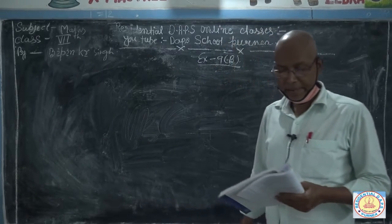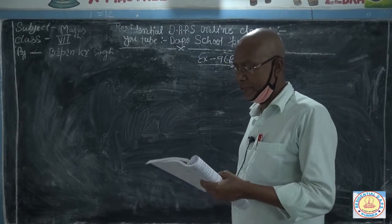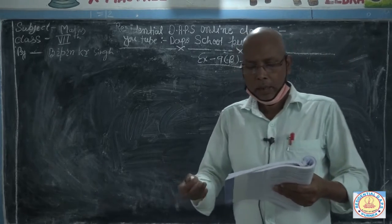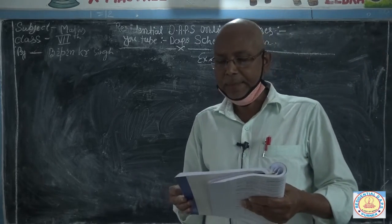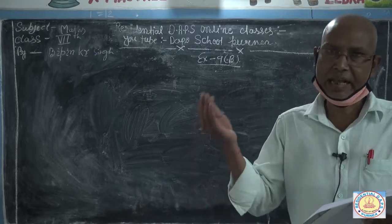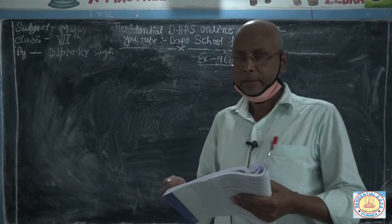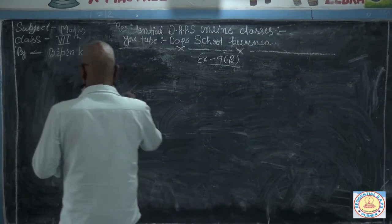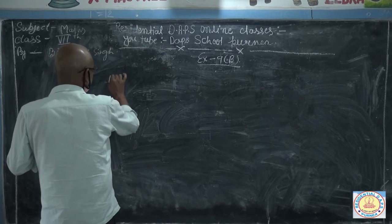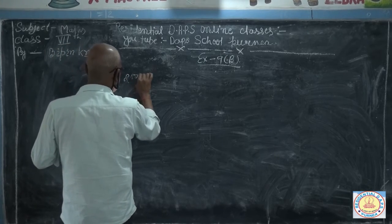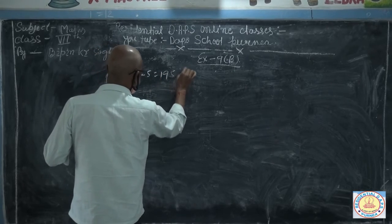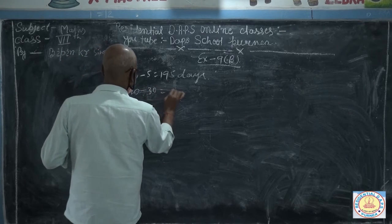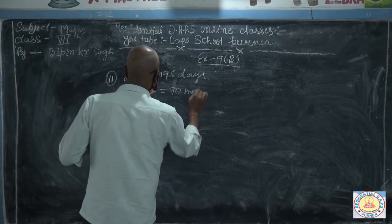Question number eleven. A group of 120 men had provisions for 200 days. After 5 days, 30 men died due to an epidemic. How long will the remaining food last? The remaining days of provisions are 200 minus 5 equals 195 days, and remaining men are 120 minus 30 equals 90 men.